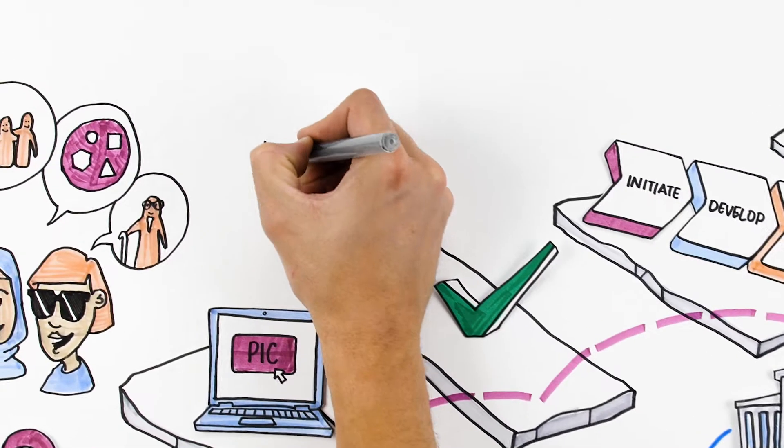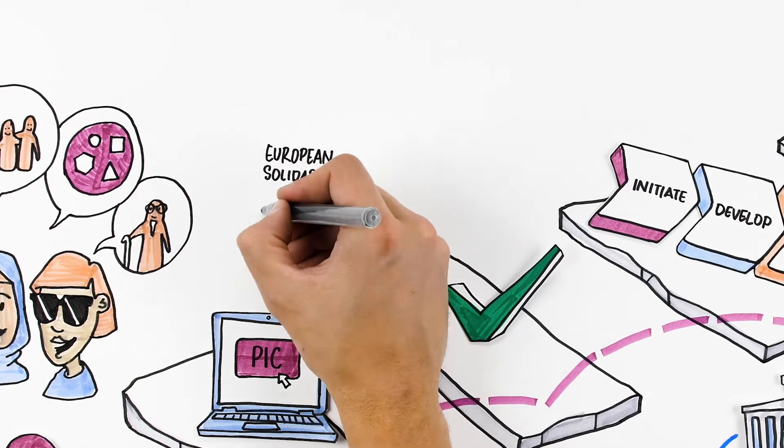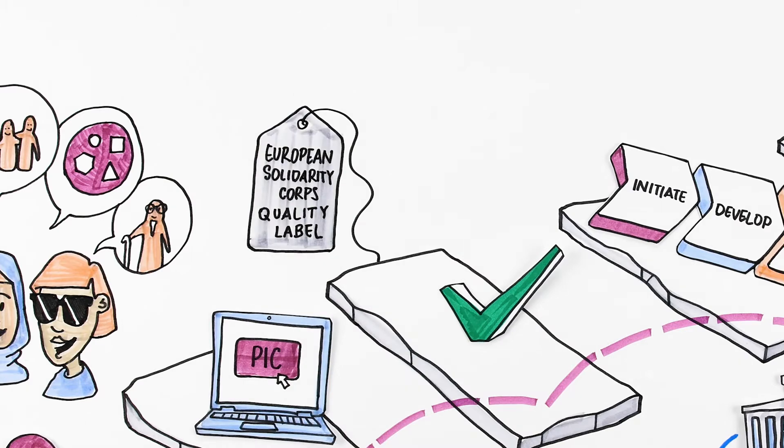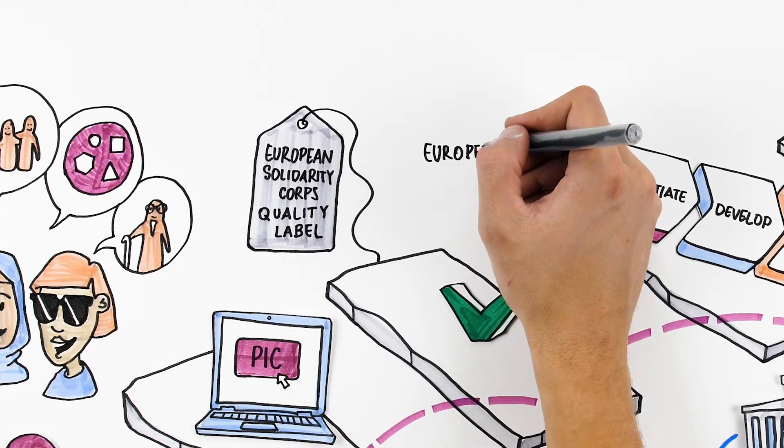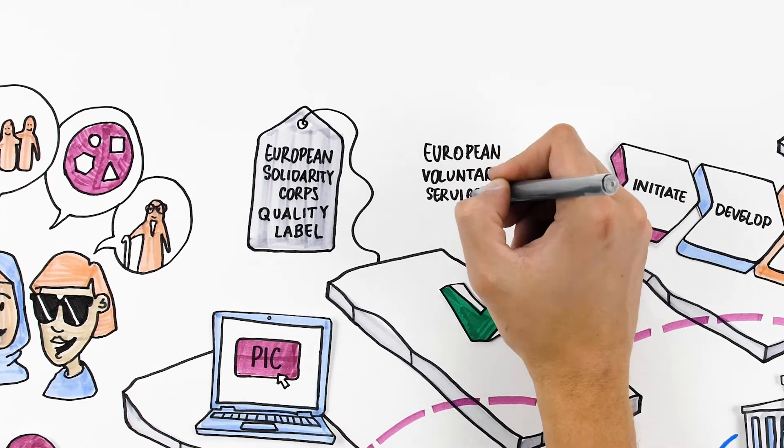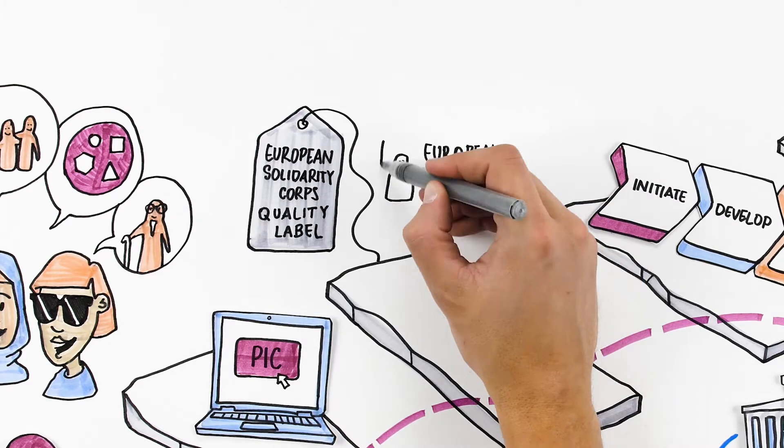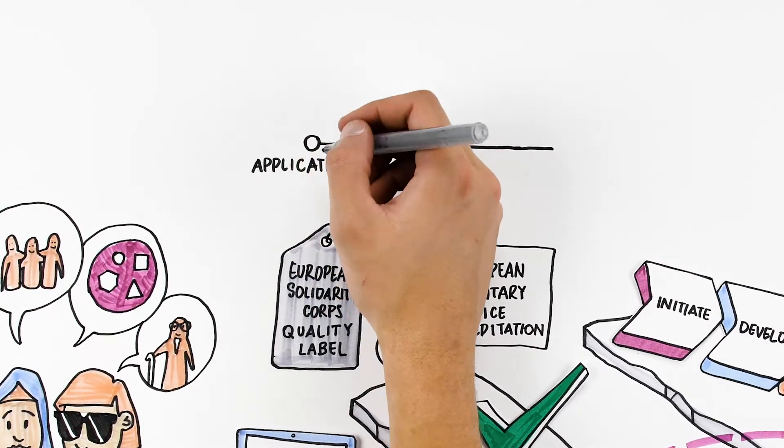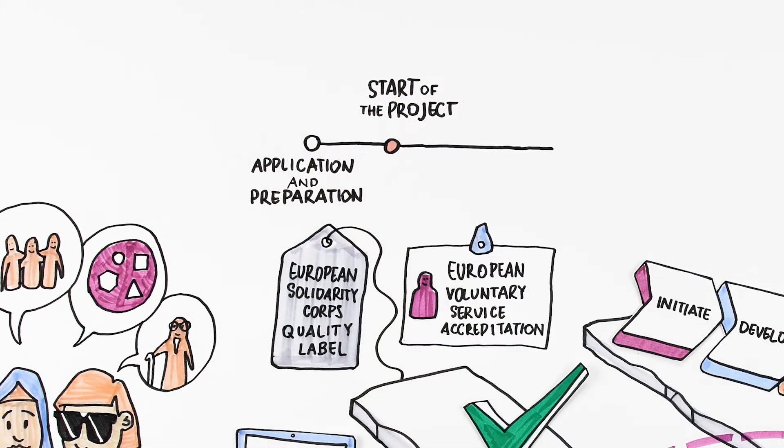Applicant organization must be accredited with either quality label or Erasmus Plus volunteering accreditation by the grant application deadline. Partner organizations who will be supporting or hosting participants in a project can apply for quality label later but they must be accredited before the start date of the project activities at the latest.